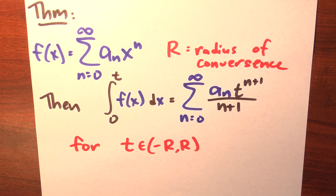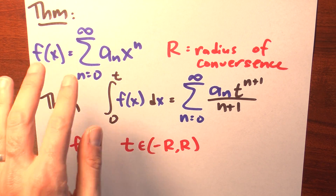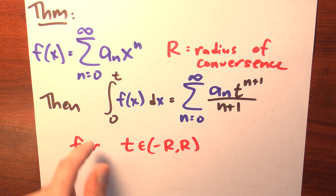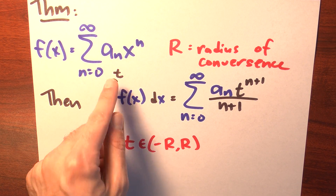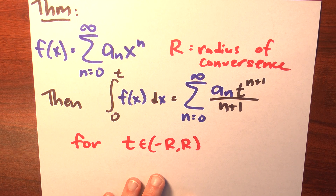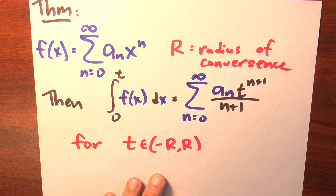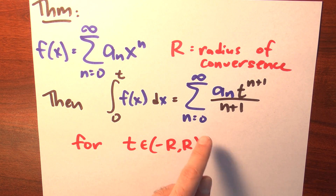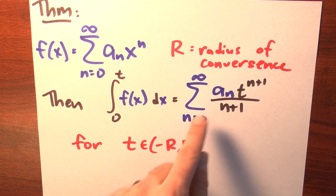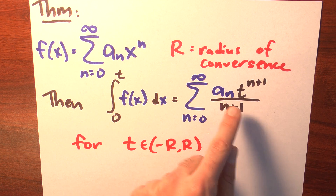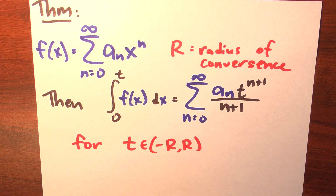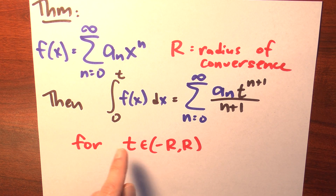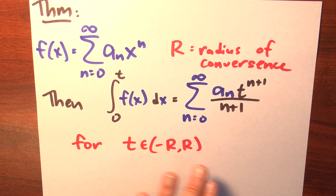Well then, I can integrate this function term by term. Meaning that the integral of f of x dx, with x going from 0 to some parameter t, equals the sum as n goes from 0 to infinity of a sub n times t to the n plus 1 over n plus 1. And this is true for any value of t between minus R and R.